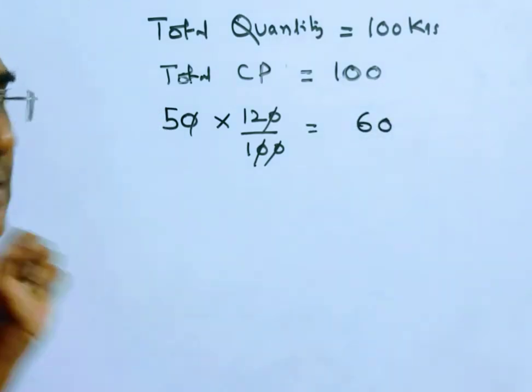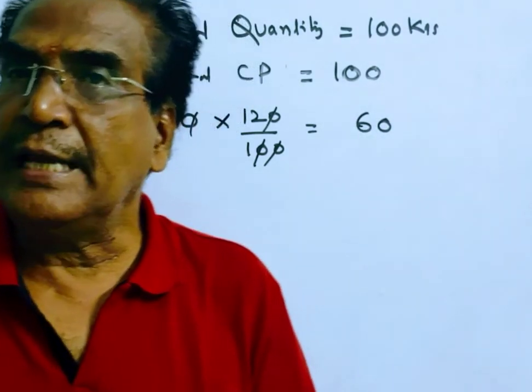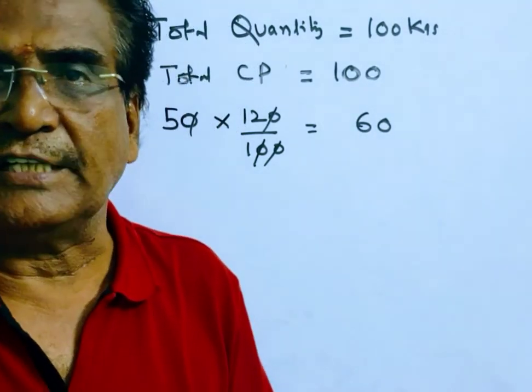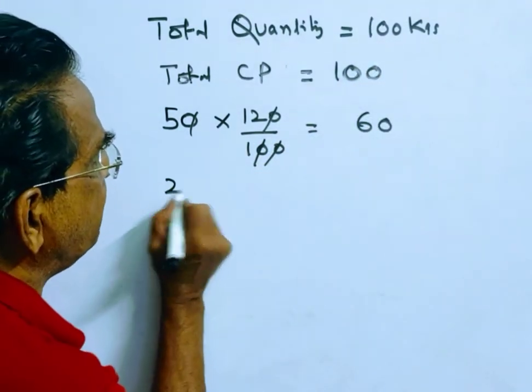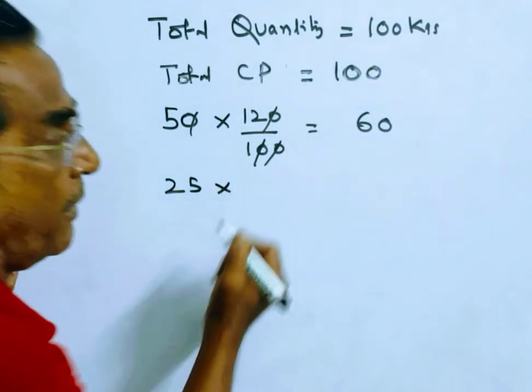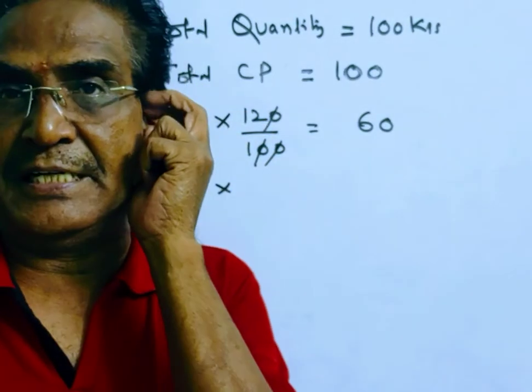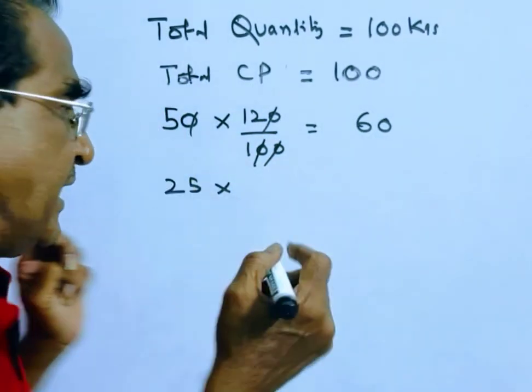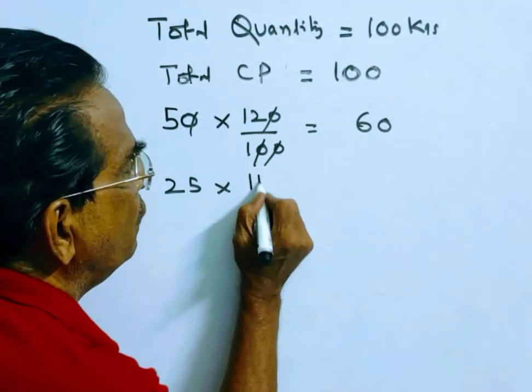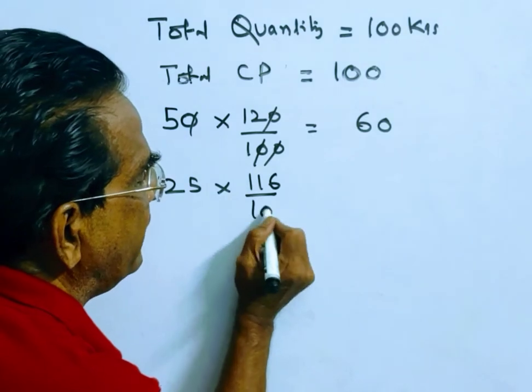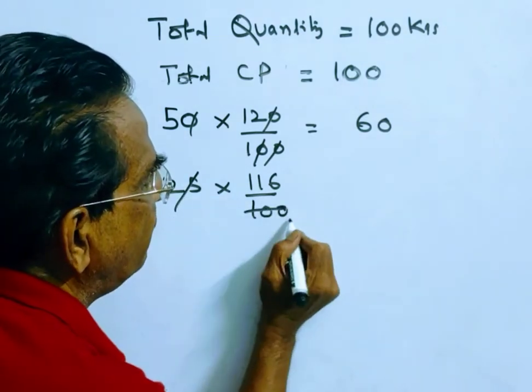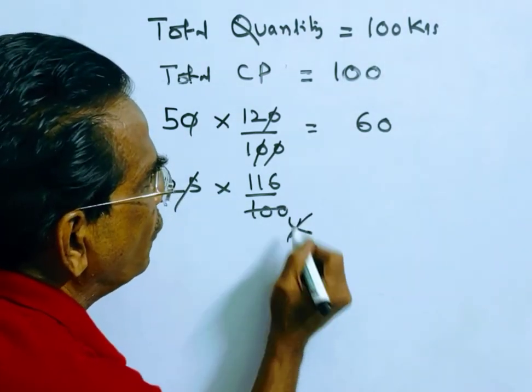60 rupees amount is realized. And then a quarter of the quantity, quarter of the quantity means 25 kgs worth of sugar is sold at a profit of 16%. Then what is the amount realized? 25 times 116 by 100, 116 by 100, 25 becomes 29, so 29 rupees amount is realized.